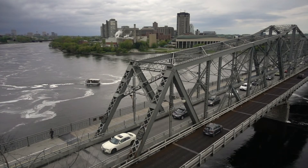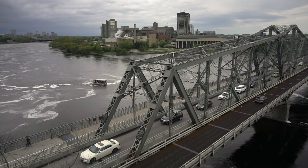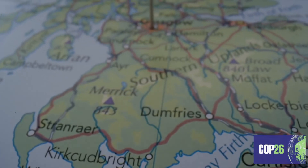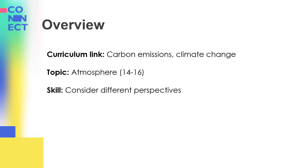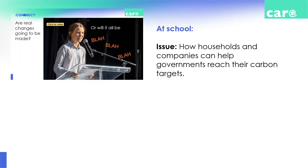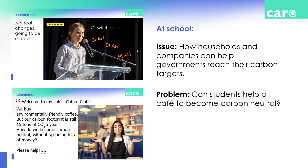We start off with the Care stage. At school, the students are introduced to the topic and context, based around the climate change conference in Glasgow in 2021. The skill students are going to learn is to consider different perspectives. They look at promises governments are making to reduce carbon emissions, see a video of Greta asking whether any real change will happen, and then are introduced to the problem they'll help solve: helping a company reduce its carbon footprint to become carbon neutral, acting as climate consultants for a cafe owner.